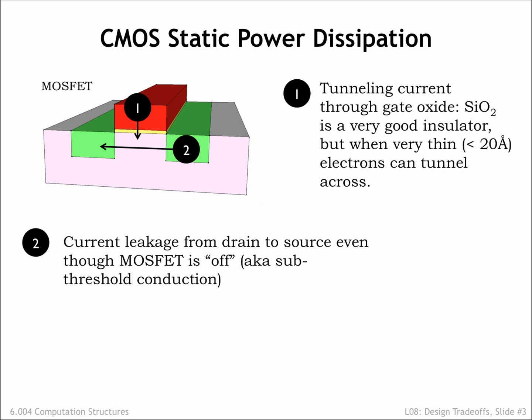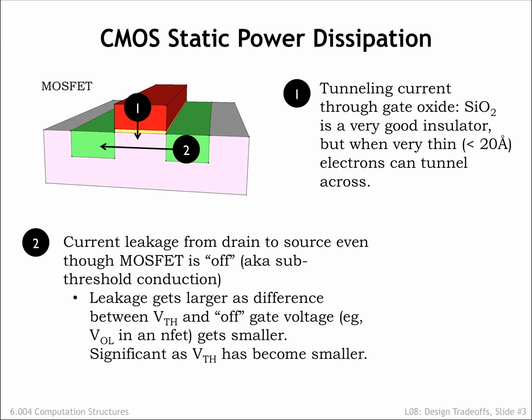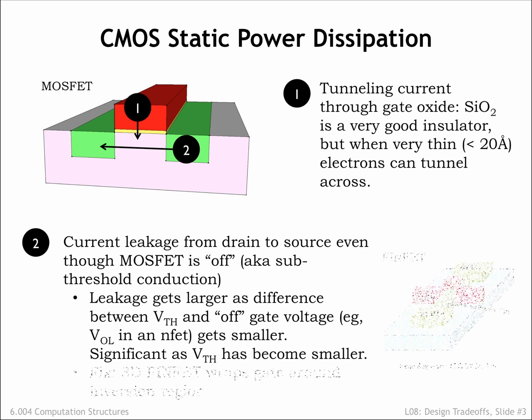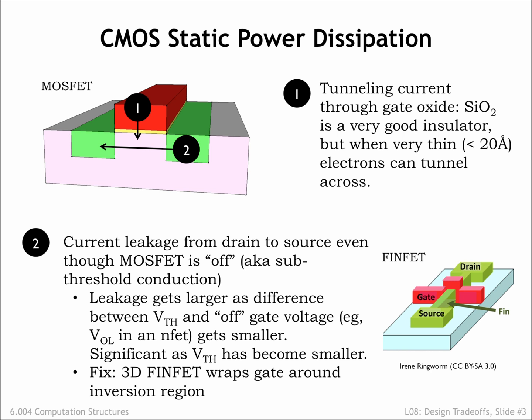The second effect is caused by current flowing between the drain and source of an NFET that is, in theory, not conducting because VGS is less than the threshold voltage. This effect is called sub-threshold conduction and is exponentially related to VGS minus VTH, a negative value when the NFET is off. As VTH has been reduced in each new generation of technology, VGS minus VTH is less negative, and the sub-threshold conduction has increased. One fix has been to change the geometry of the NFET so the conducting channel is a tall, narrow fin with the gate terminal wrapped around three sides — sometimes referred to as a tri-gate configuration. This has reduced the sub-threshold conduction by an order of magnitude or more, solving this particular problem for now.